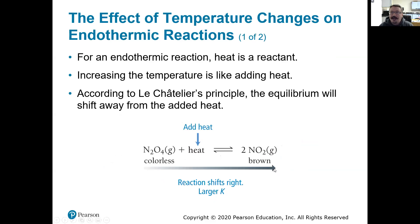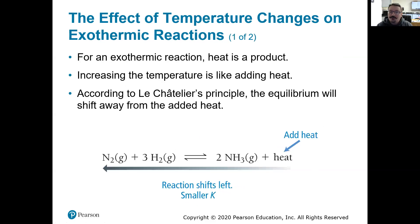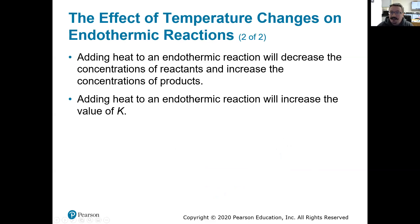Endothermic reactions are the opposite — they have a positive delta H and require that energy be put in, so heat is going to be a reactant. Add heat, add a reactant, push it towards the product side. Remove heat, remove a reactant, pull it towards the reactant side. Unlike concentration changes, remember that K — the equilibrium constant — is specific for that reaction at that temperature. So if we alter the temperature, we're going to affect our K value as well. Adding heat to an endothermic reaction will increase the amount of products and also increase the value of K.